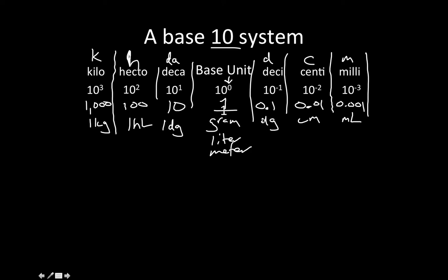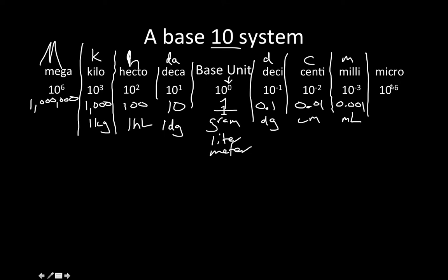For our quiz, we need to know a couple more. Mega — like in megabyte — is 10 to the sixth, so that's 1,000,000. The notation is a capital M. On the other side is micro, which we might use in lab with microliters. Micro is 10 to the negative sixth, so that's 0.000001. The notation is a lowercase mu, which looks like a funky U or funky M.